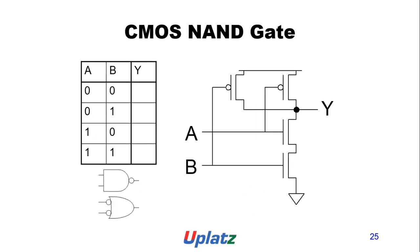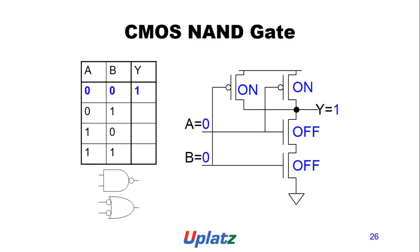CMOS NAND gate: the truth table has inputs A and B with output Y. The two types of symbols are shown. When A and B are both 0, the pull-up transistors are on, so Y is 1. The other combinations are shown with corresponding transistor states.